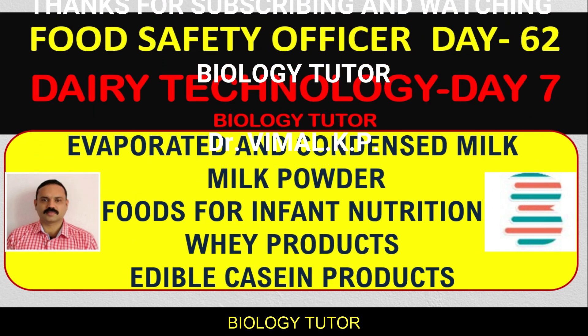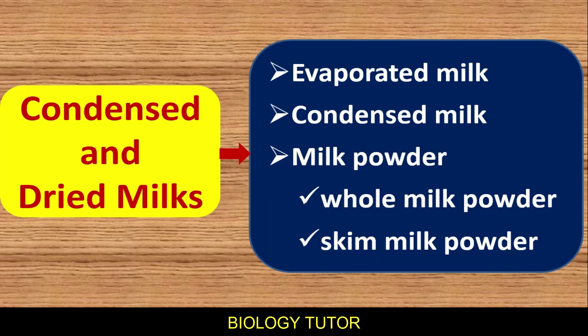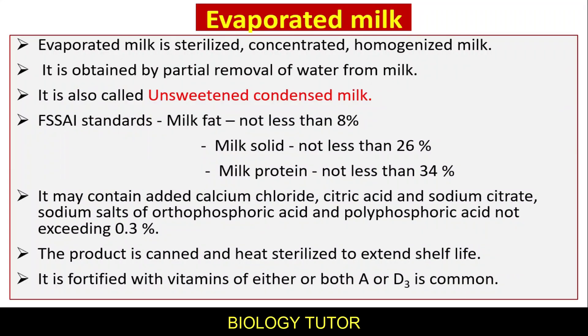Today is the seventh day of Dairy Technology and Food Safety Officer preparation. Day 62: condensed and dried milks are classified into evaporated milk, condensed milk, and milk powder. In milk powder, whole milk powder and skim milk powder are there. Now, what is evaporated milk?